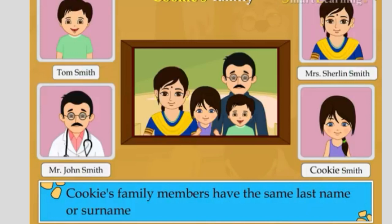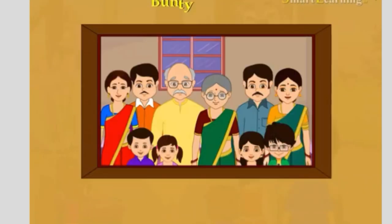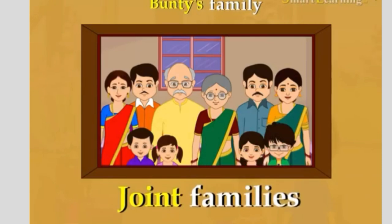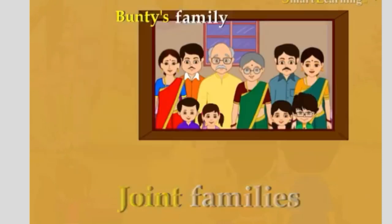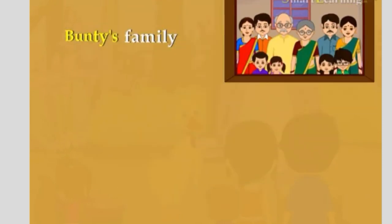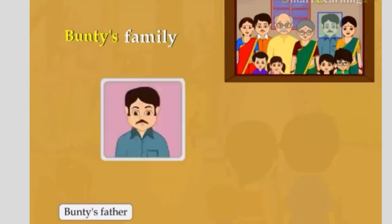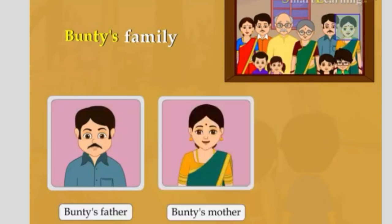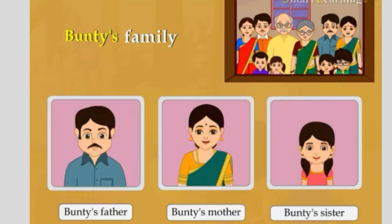Some families are big like Bunty's family. They are called joint families. In Bunty's family, this is his father. This is his mother. And this girl is Bunty's sister.